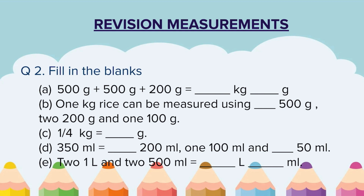Question 2: Fill in the blanks — A) 500 grams + 500 grams + 200 grams equals dash kg dash grams. B) 1 kg of rice can be measured using dash 500 grams, 2 200-gram weights, and 1 100-gram weight. C) 1/4 of a kg equals dash grams. D) 350 ml equals dash 200 ml, 100 ml, and dash 50 ml.